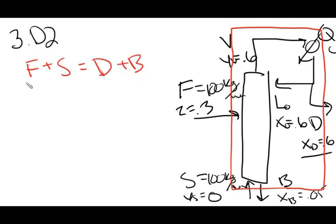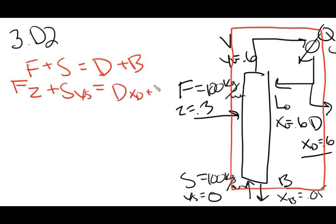We can also do an ethanol balance: F times x_F plus S times x_S equals D times x_D plus B times x_B. Each of these terms is the total mass flow of the stream times the weight fraction of ethanol in that stream, giving the total amount of ethanol in that stream. The total mass of ethanol in equals the total mass of ethanol out.